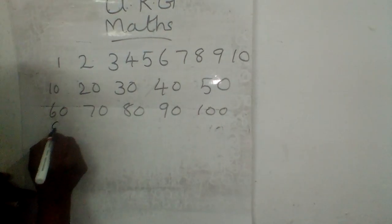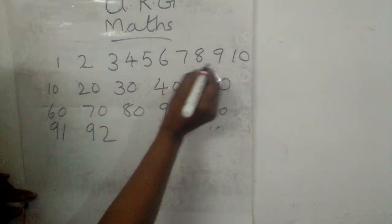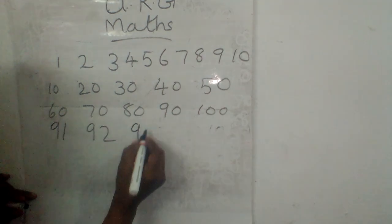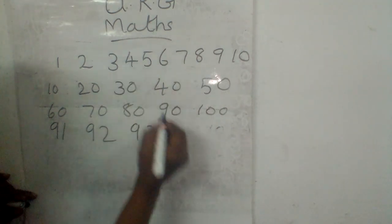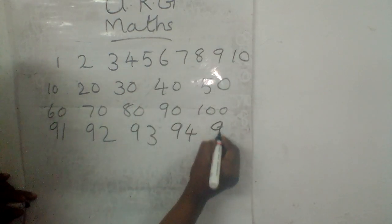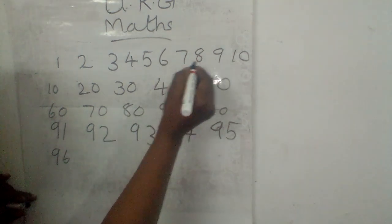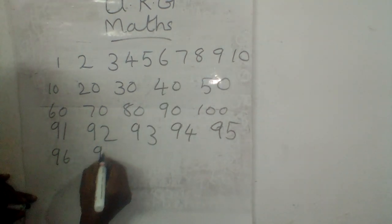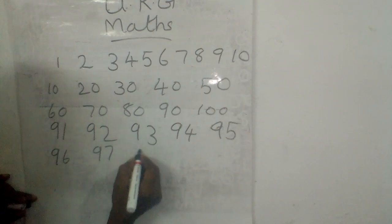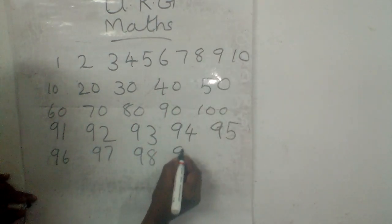9, 2, 92. 9, 3, 93. 9, 4, 94. 9, 5, 95. 96, 97, 97, 98, 98, 99, 99.